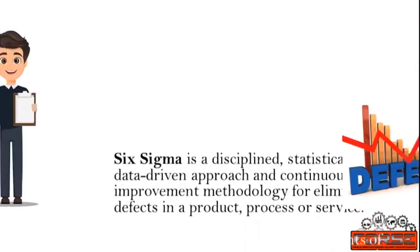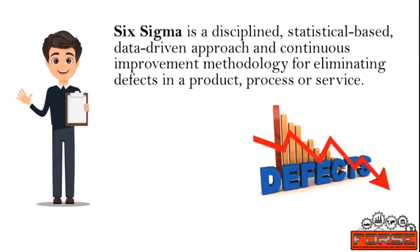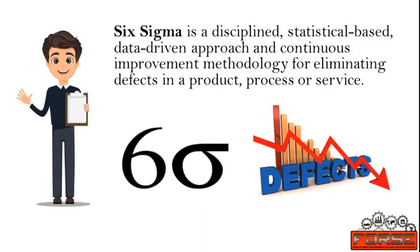We'll start by understanding what is Six Sigma. Six Sigma is a disciplined, statistical-based, data-driven approach and continuous improvement methodology for eliminating defects in a product, process, or service. The greatest achievement of it was to shift the focus from after-the-fact measurements of defects to controlling the processes in order to minimize those defects. Sigma is denoted by the Greek letter sigma, representing the standard deviation of a population, and it shows the variation of a set of values with respect to the mean. Smaller the deviation, closer the points are to the mean, and vice versa.